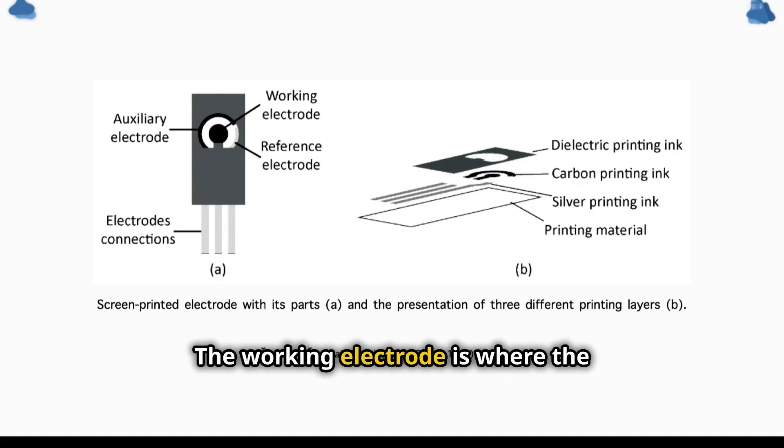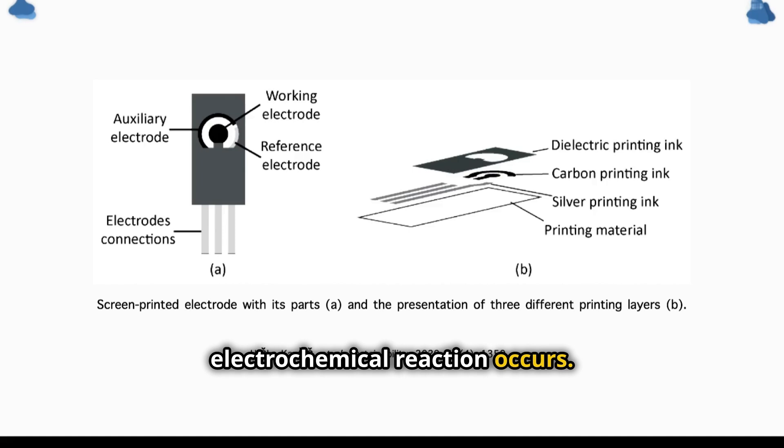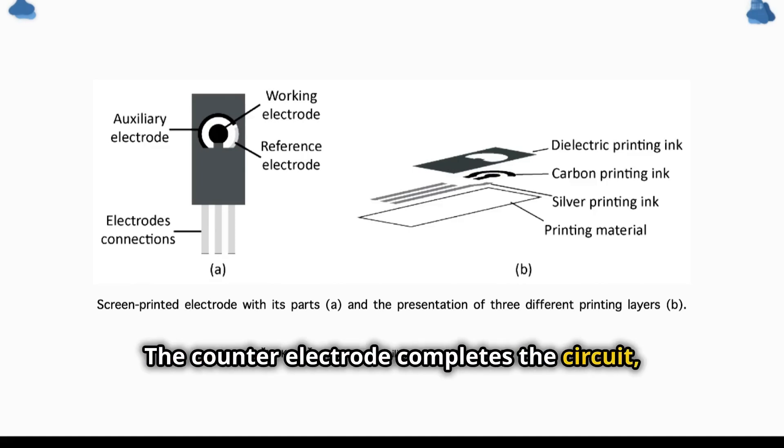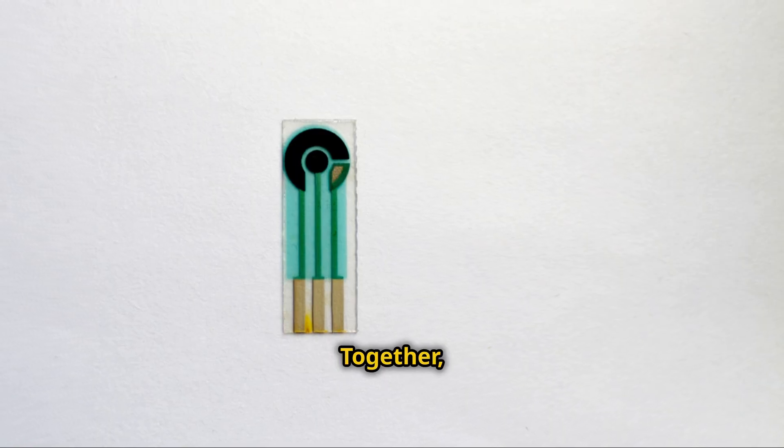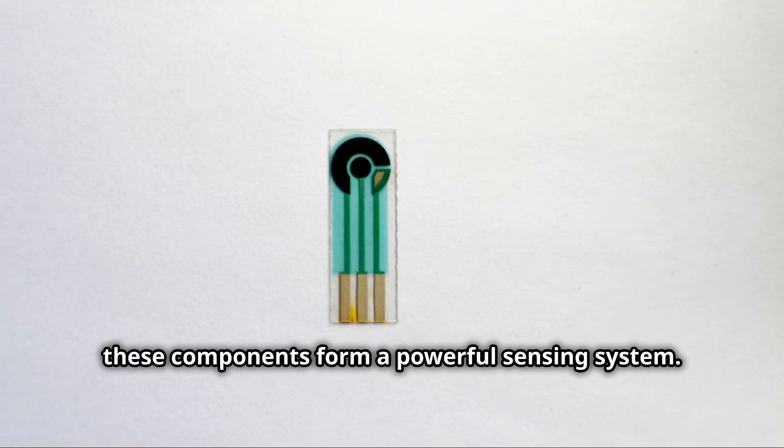The working electrode is where the electrochemical reaction occurs. The counter-electrode completes the circuit, and the reference electrode provides a stable reference point. Together, these components form a powerful sensing system.